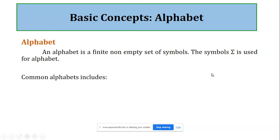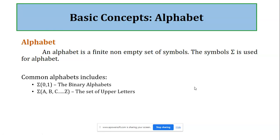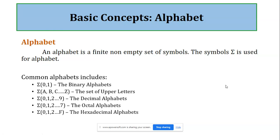Here are some common alphabet examples. If we take the alphabet {0, 1}, we call it a binary alphabet representing binary numbers. Capital A to Z is the set of uppercase letters. Lowercase a to z is the set of lowercase letters. Σ = {0, 1, ..., 9} represents decimal numbers. Similarly, we can have octal alphabets and hexadecimal alphabets. This is the alphabet we will use when designing strings as input to a finite automaton.